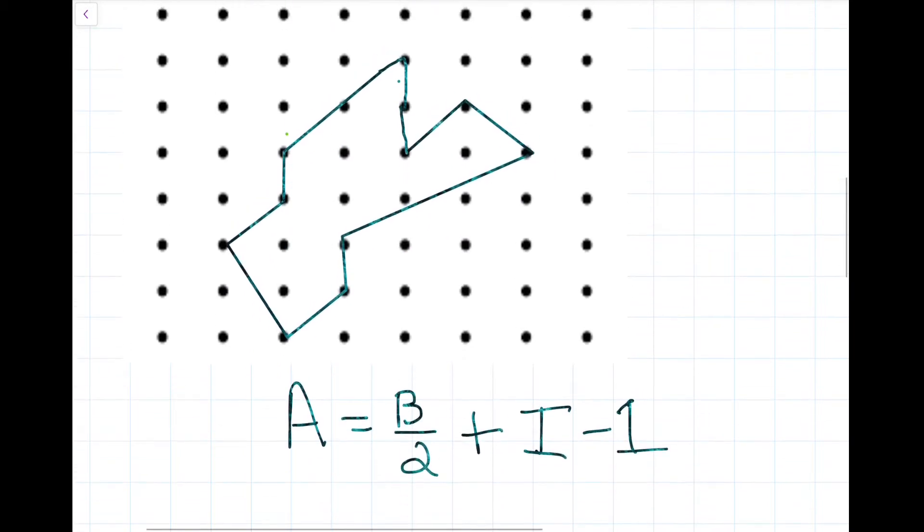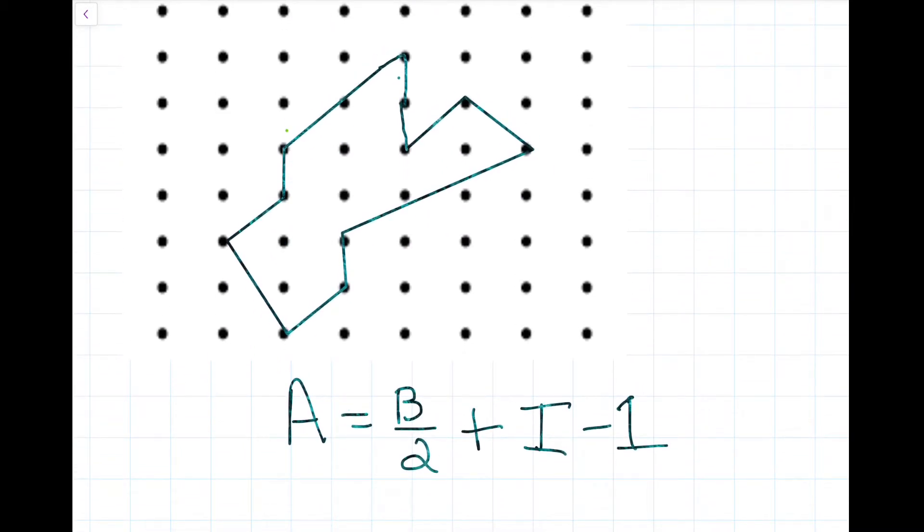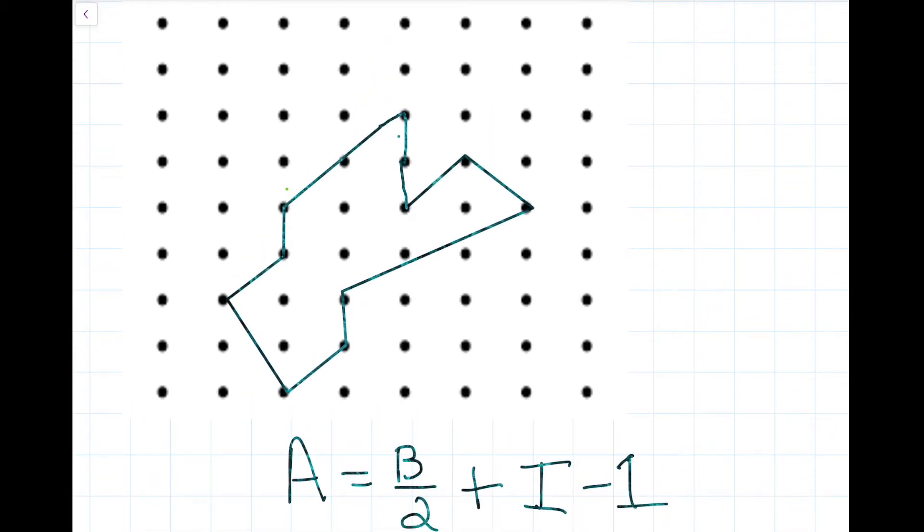And we know the formula is A equals B over 2 plus I minus 1, and it would be really nasty if we actually had to do the actual computation of splitting this up into different pieces. But we have it now, so we can find the number of boundary points: 1, 2, 3, 4, 5, 6, 7, 8, 9, 10, 11, 12.